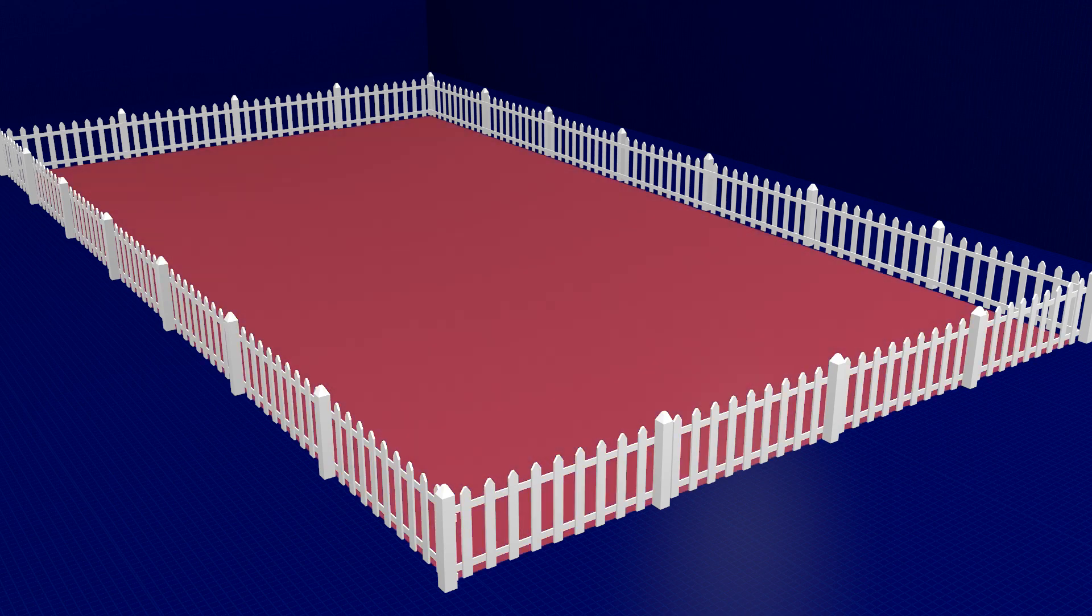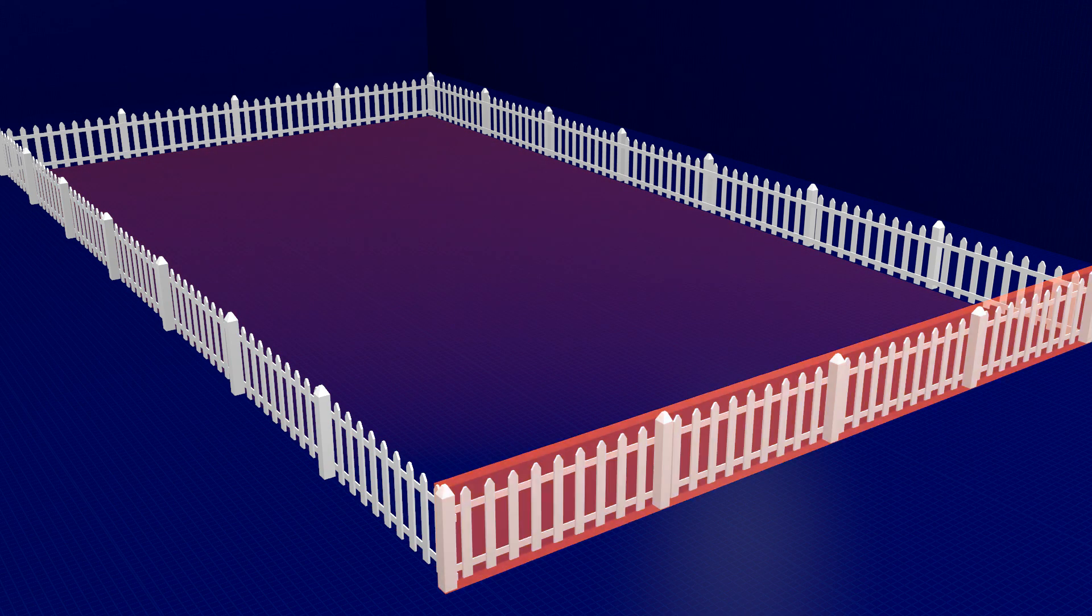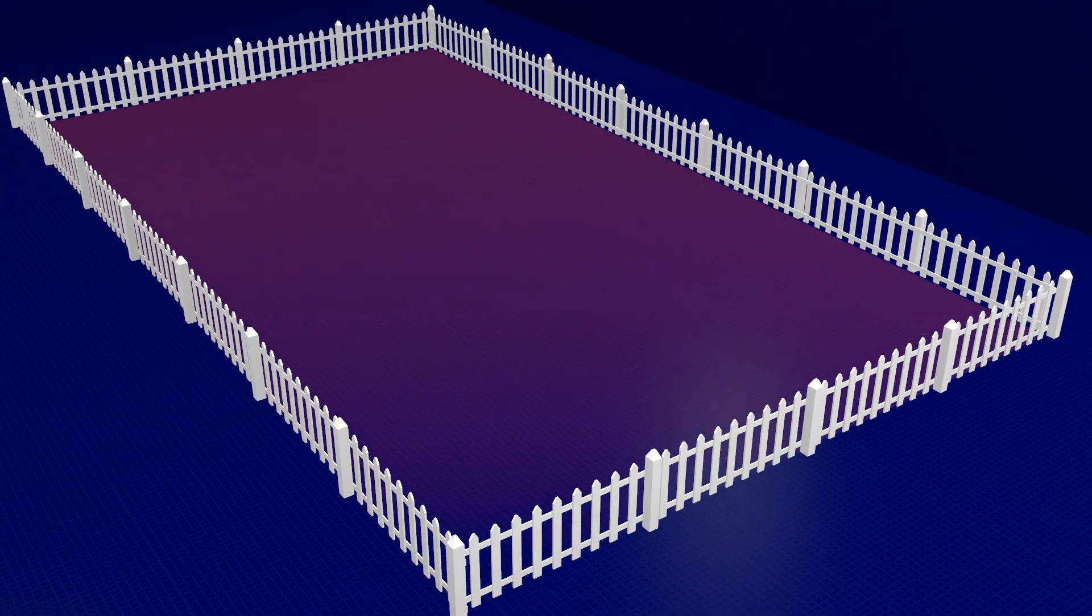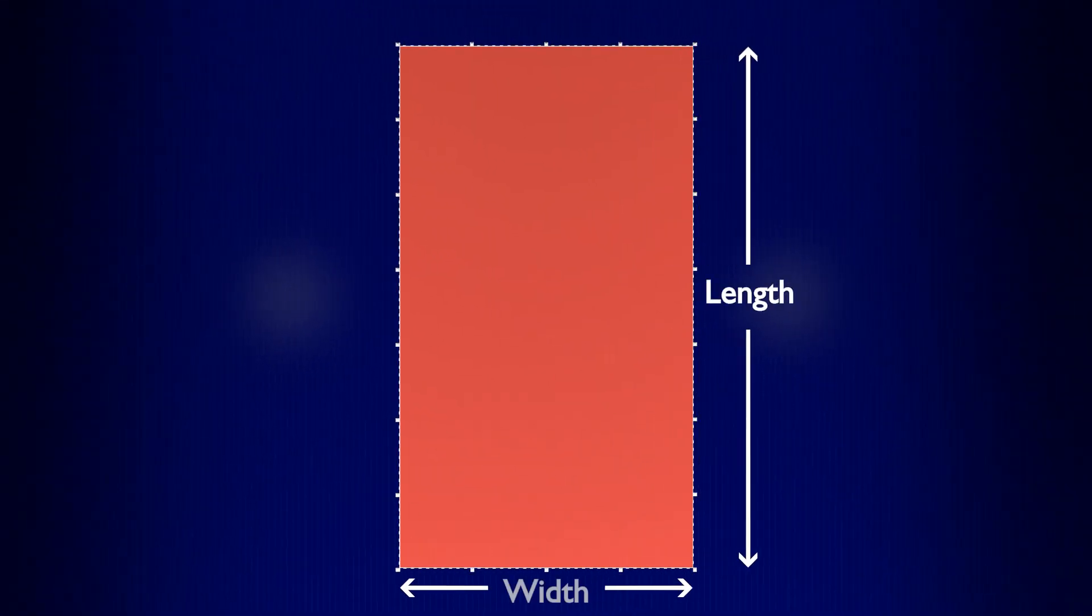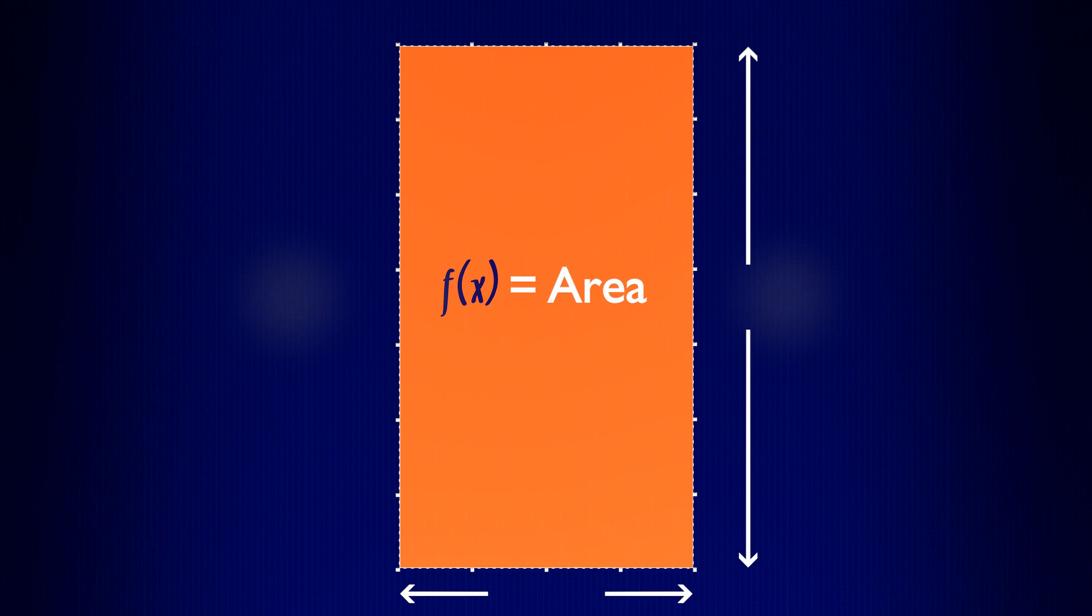Let's express the area of the field as a function of one of its dimensions. The formula for the area of a square or rectangle is length times width, and we want a function whose output is the area of the field when given a value for x, a dimension of one side.